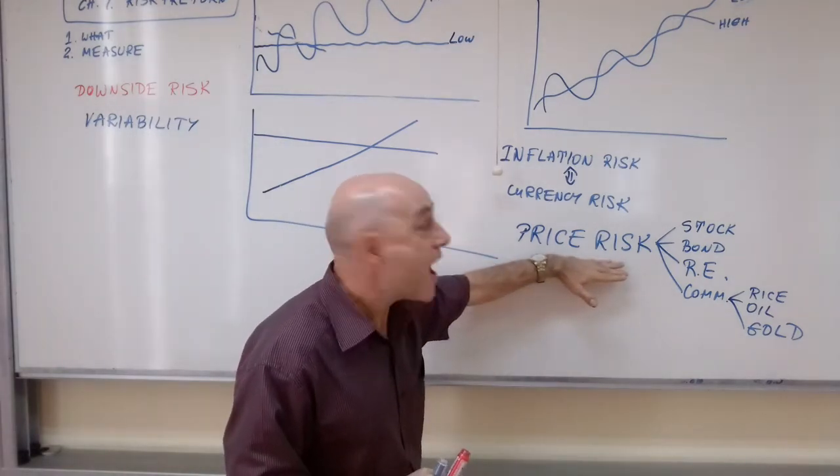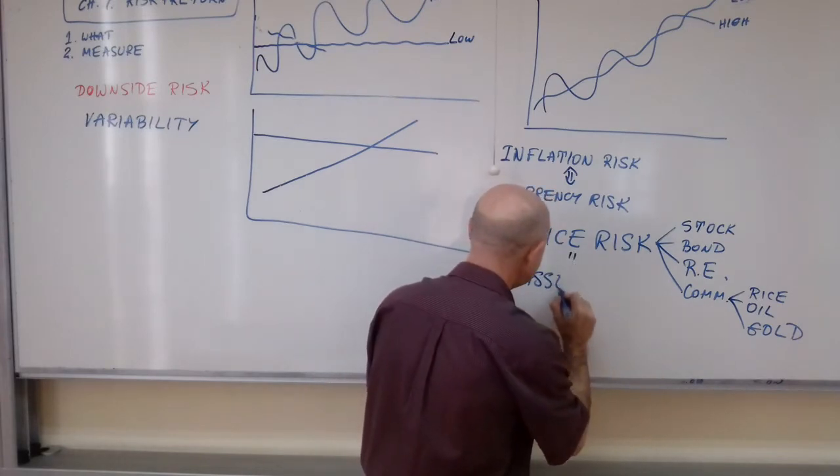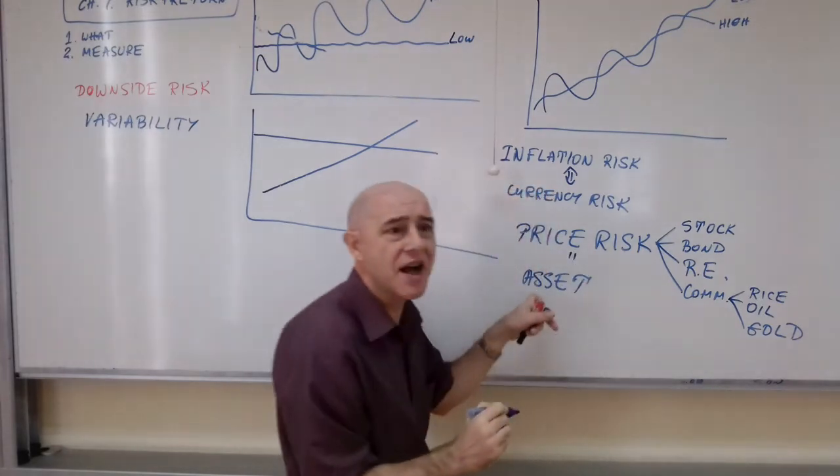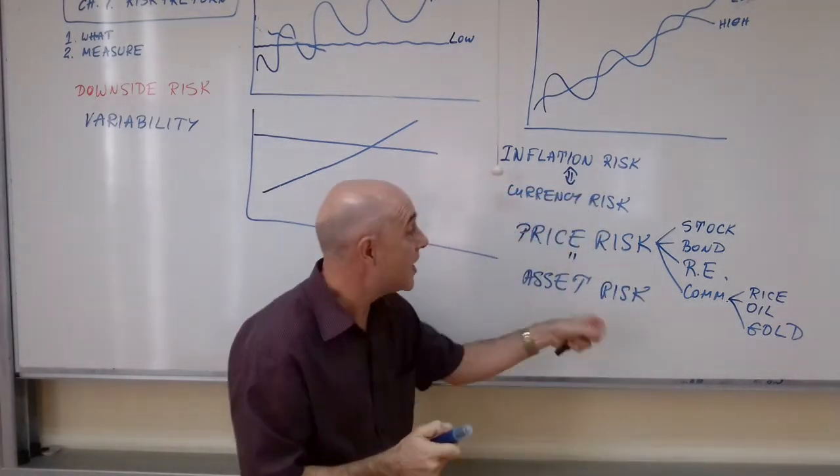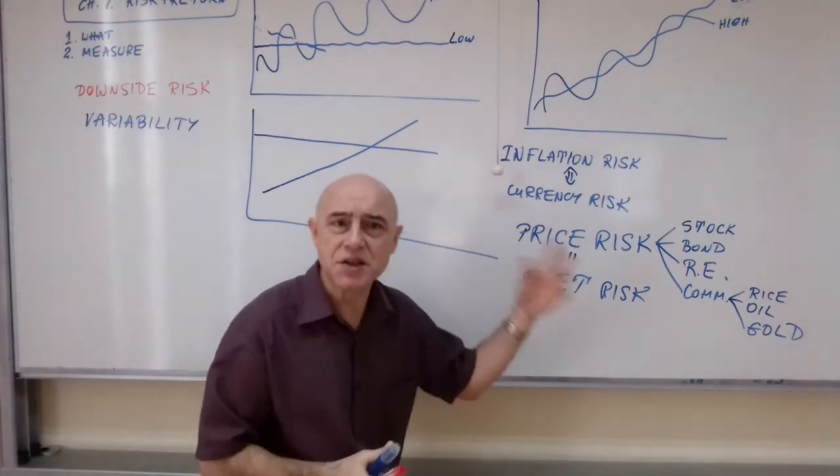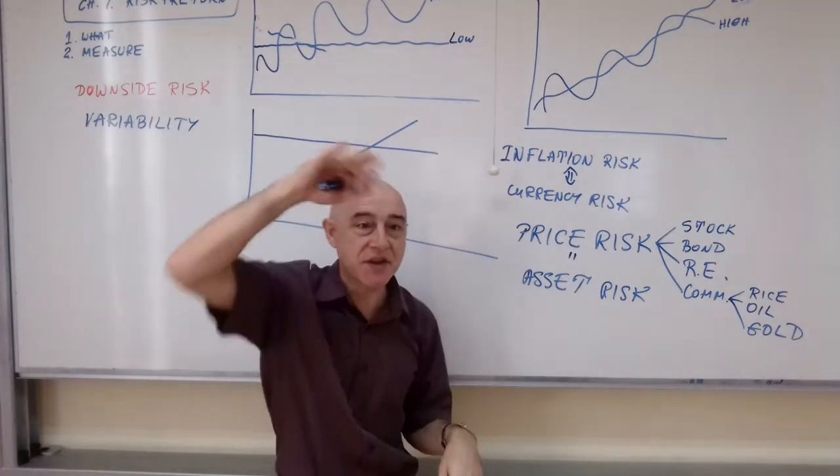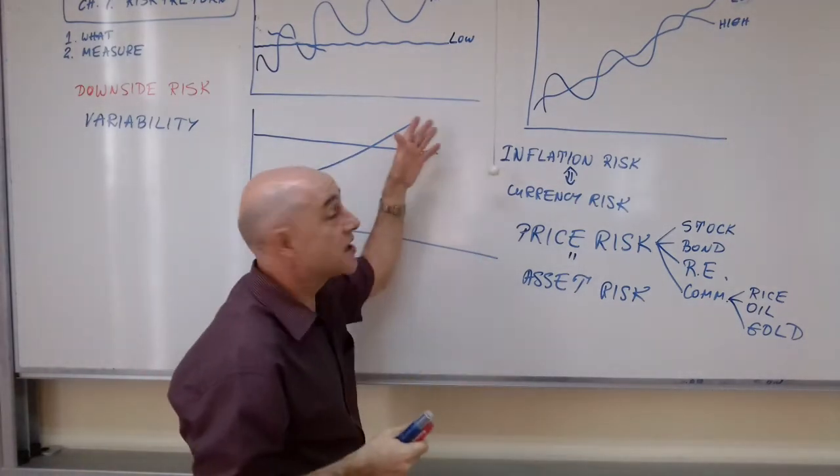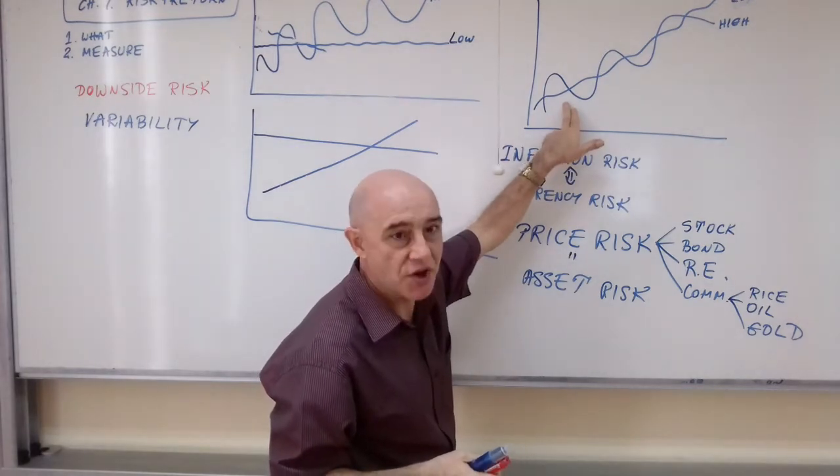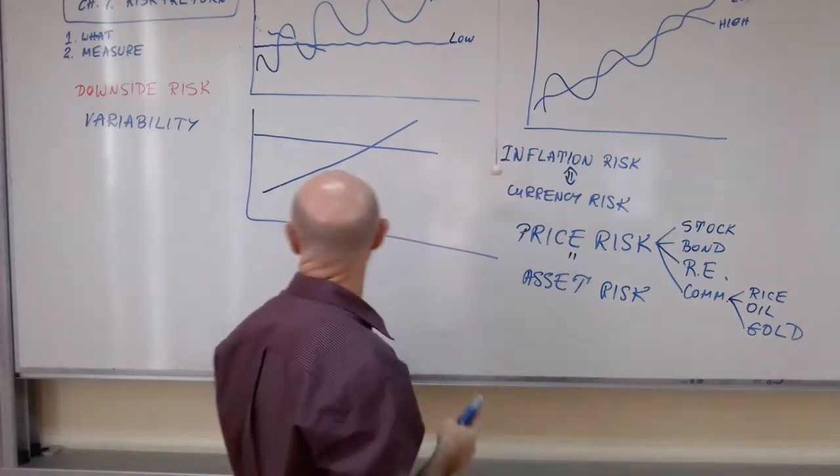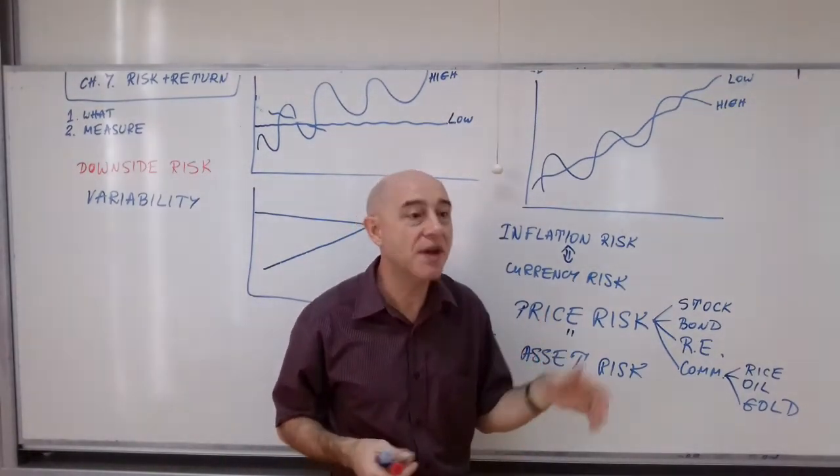Any asset, sometimes price risk may be also called, but this is very unclear term, asset risk. Of course, we refer to the price of the asset. So, whether it's rice or a stock or a bond, the price, as long as it varies in zigzags, is a risk. The bigger the zigzag, the bigger the risk. We call this variability.